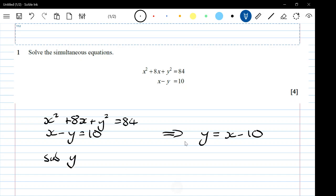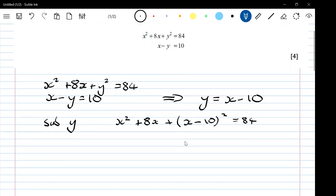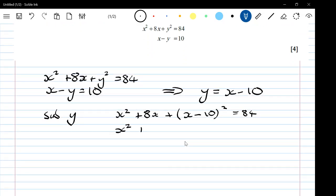To get x squared plus 8x plus (x minus 10) squared equals 84. We're going to multiply out the brackets and collect together like terms.